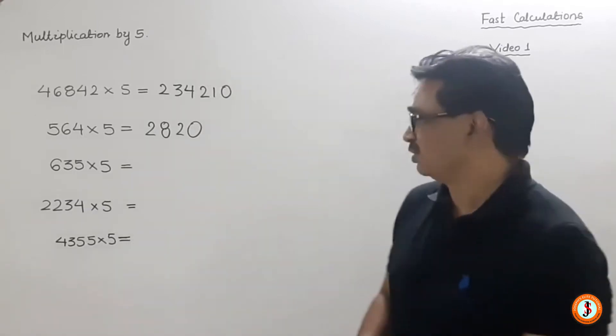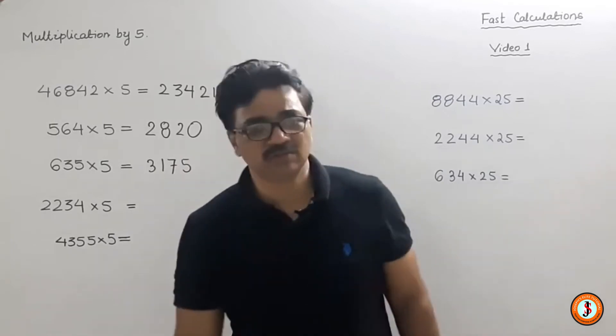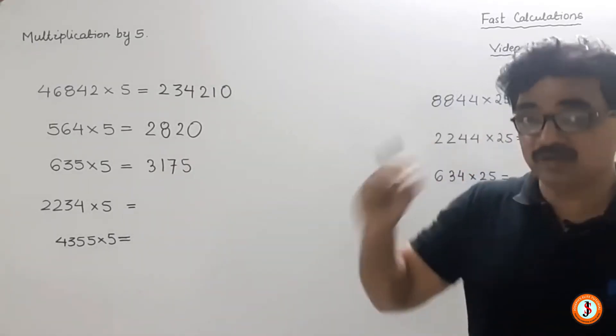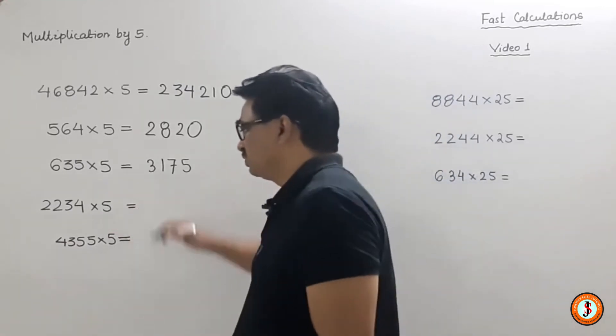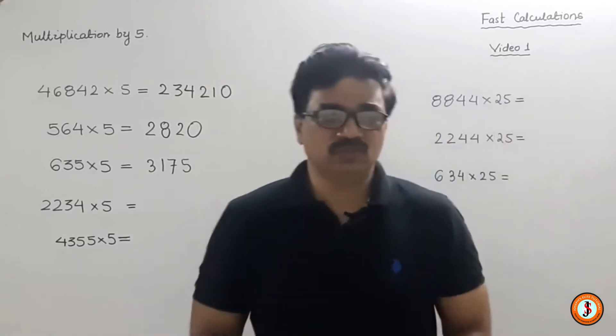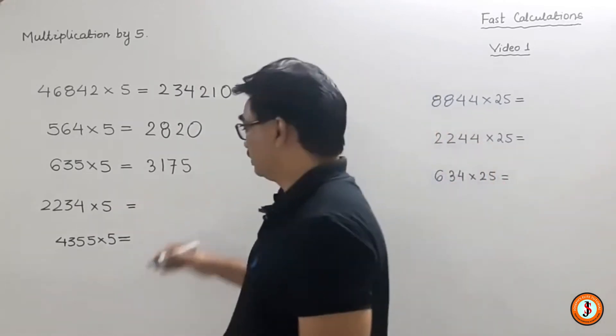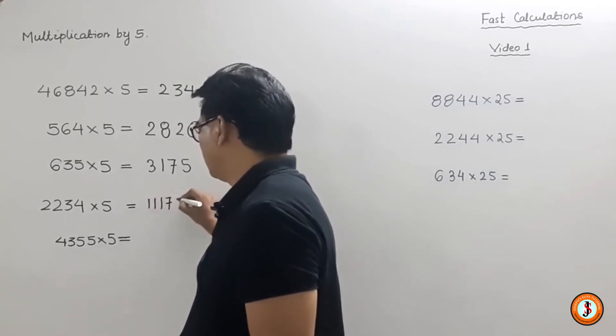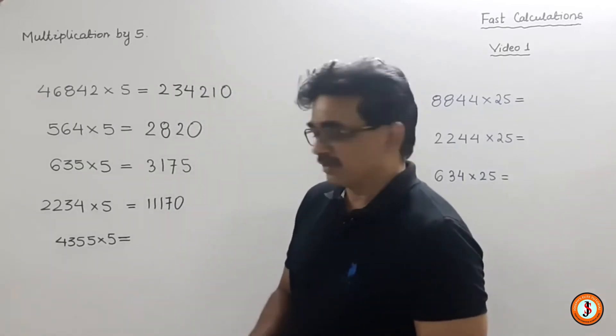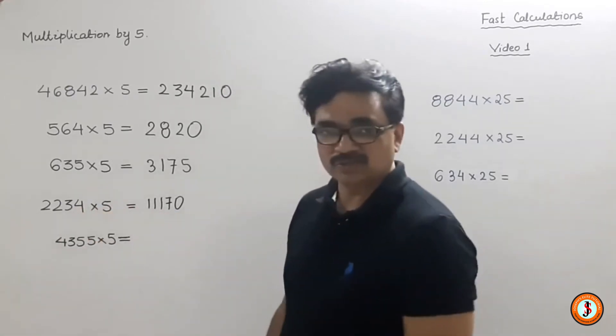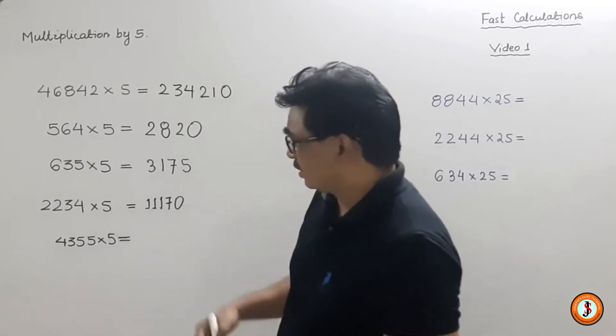So even if you're sitting idle and tired, if you want to do some work, then start with shortcuts. Take the Lord's name, that's right. Let's move ahead. See 2234 × 5 = 2234 in English we say two thousand two thirty-four. Anyway, now what we have to do is halve this. Half of 2200 will be 1100, and half of 34 will be 17, so it becomes 1117.